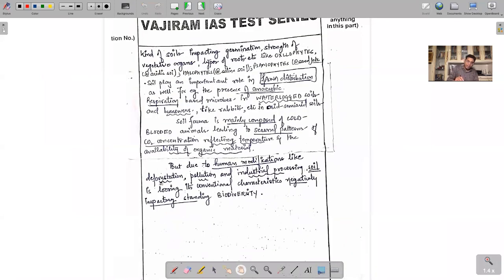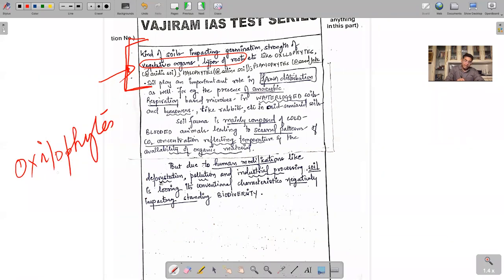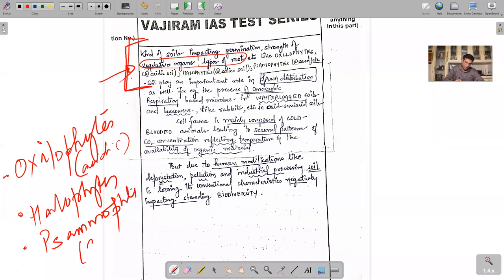Soils are important because this is an important addition to your content - you need to know specific types of life forms that are dependent on soils. We have oxylophytes, halophytes. These are plants which can grow in acidic soils. Halophytes are plants which grow on saline soils. We have psammophytes - plants which grow on sand-type soil.